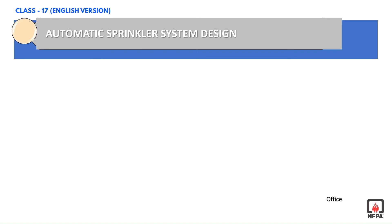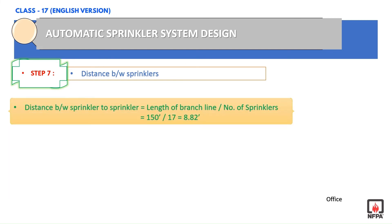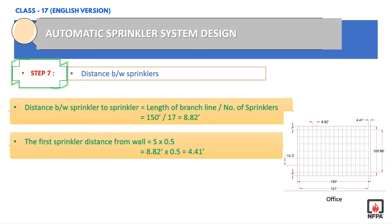Step 7: From Step 6, we already calculated 17 sprinklers per branch line. Now we calculate the distance between sprinklers by dividing the length of the branch line by the number of sprinklers — that is 150 feet divided by 17 — which equals 8.82 feet. The first sprinkler distance from the wall is the distance between sprinklers multiplied by 0.5, giving approximately 4.41 feet. Based on this information, the sprinklers will be placed as shown on the next slide.